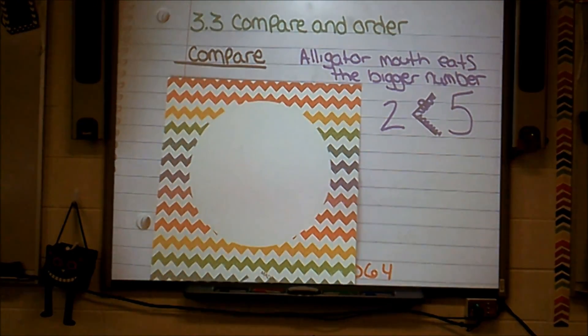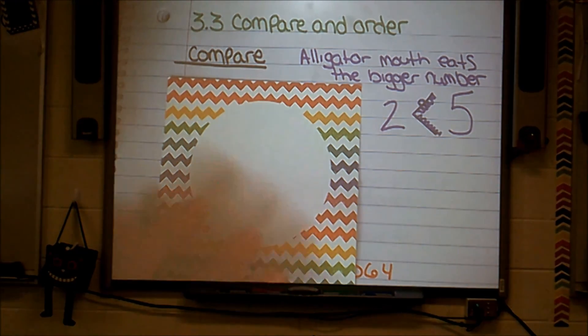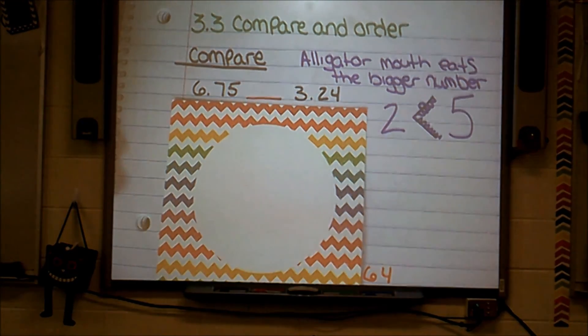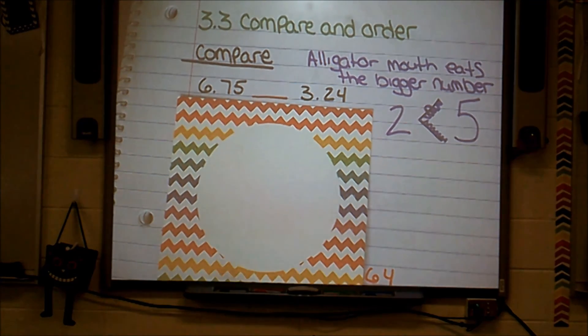So let's look at the numbers and see how we do at comparing them. Here's my first numbers that I want you to look at and compare. Again, thinking of them as money, $6.75 or 6 and 75 hundredths compared to 3 and 24 hundredths or 3 dollars and 24 cents.